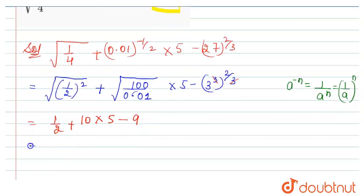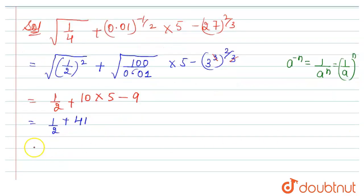Now here 1 by 2 plus 50 minus 9 is 41. So here when we take the LCM, then we get 2. Here 1 plus 41 into 2 is 82.